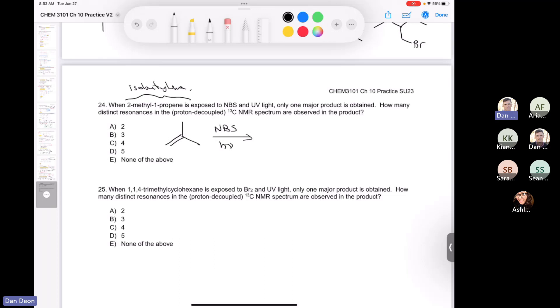Okay, when it's exposed to NBS and UV light, okay, so NBS and light, then we're going to end up doing an allylic bromination. So we're going to do allylic bromination. Alright, so where are we going to install our bromine? Well, it could be either here or here, either one doesn't matter, it's the same thing. So I'll just draw it like this, and then we have this bond over here like that. Okay, so that's the compound that we produce.